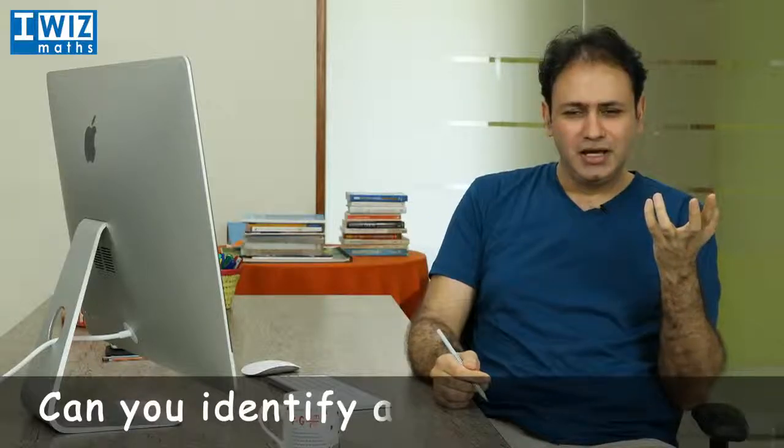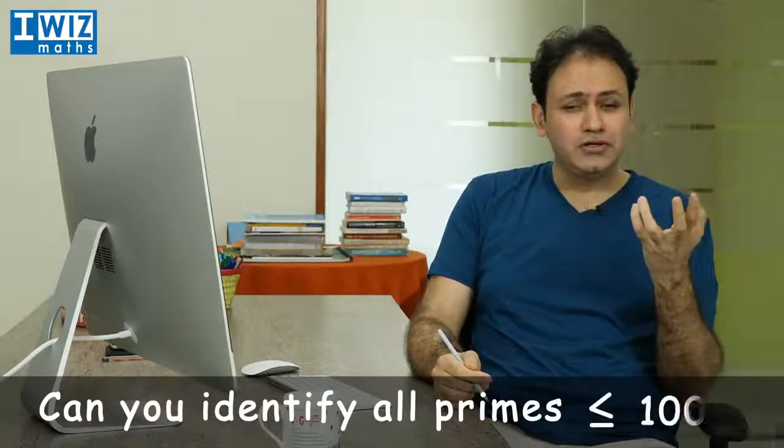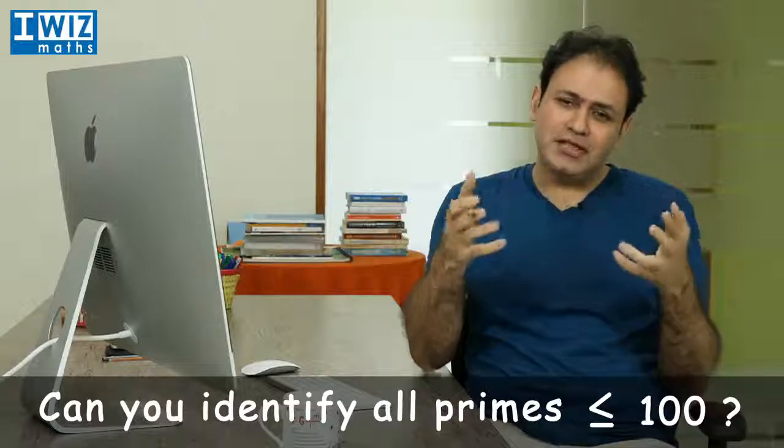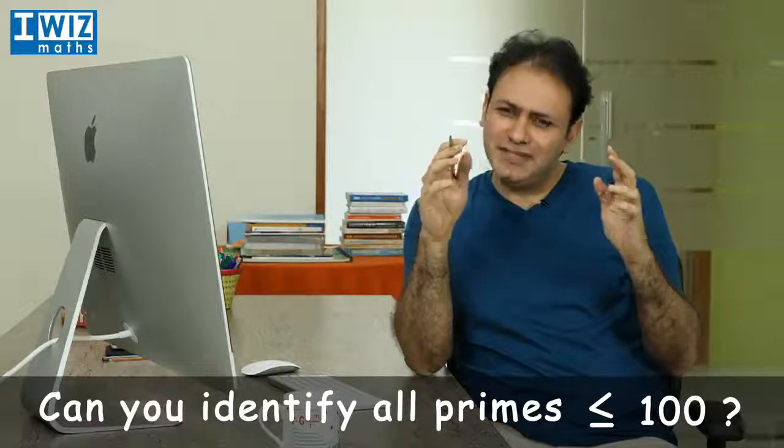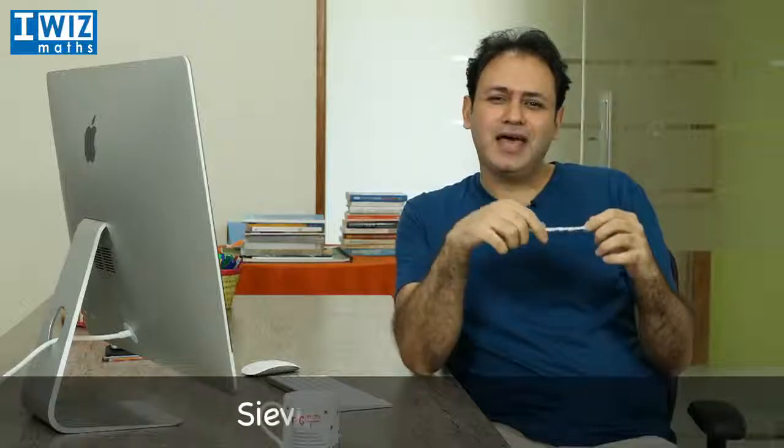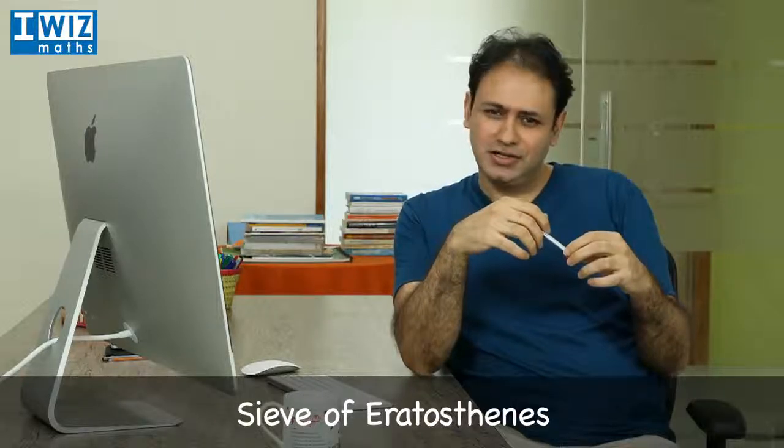So for example, if we give you the number 100 and said can you identify all prime numbers that are less than or equal to 100. The method that we will highlight is a very simple but elegant method known as the sieve of Eratosthenes.